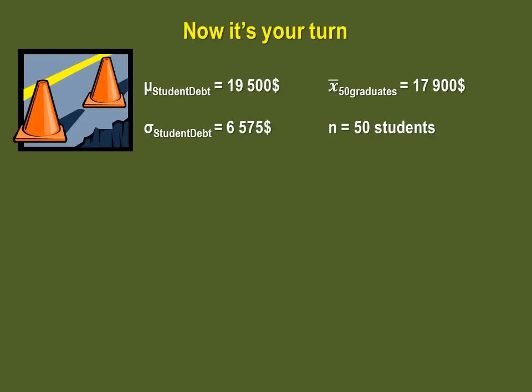Now it's your turn. So, it is said that the average student debt in Canada from students graduating from a bachelor's degree is $19,500 with a standard deviation of $6,575. But there is a university that checked out with a sample of 50 students and noticed that the average of that sample is $17,900. So, they want to know, is that significantly lower than the national student debt?